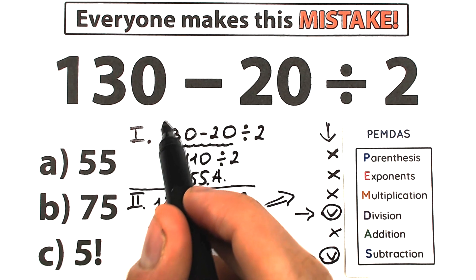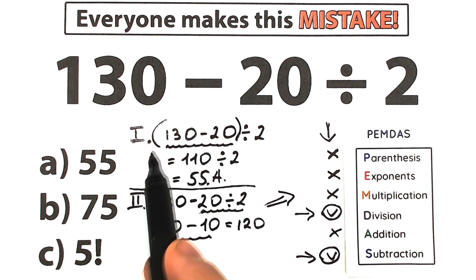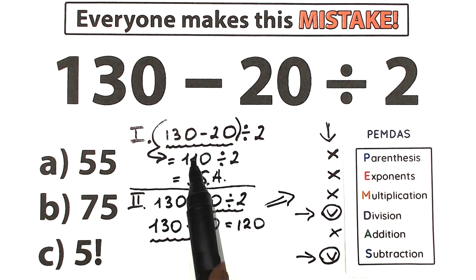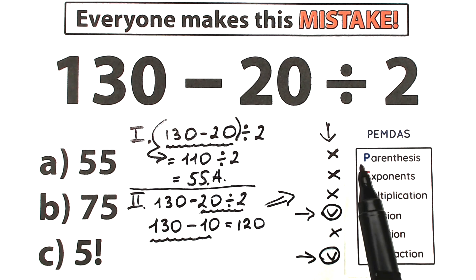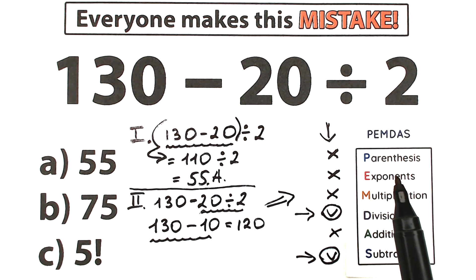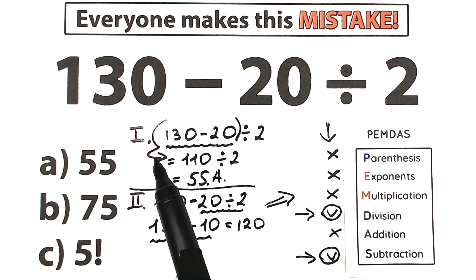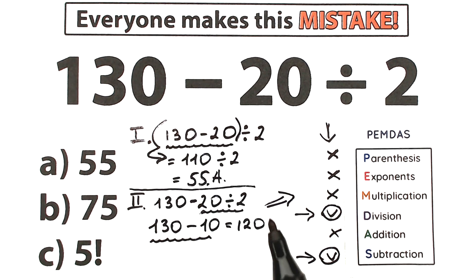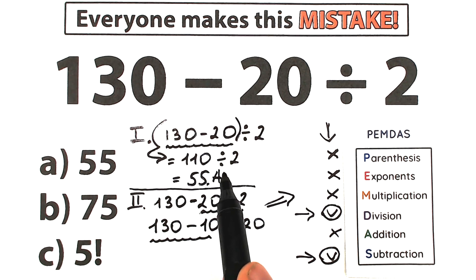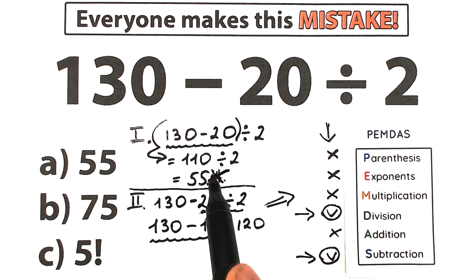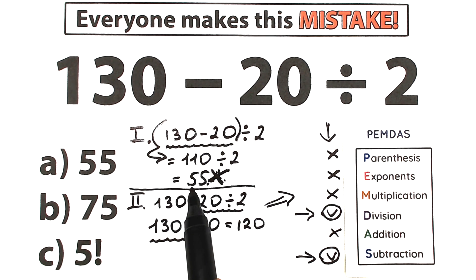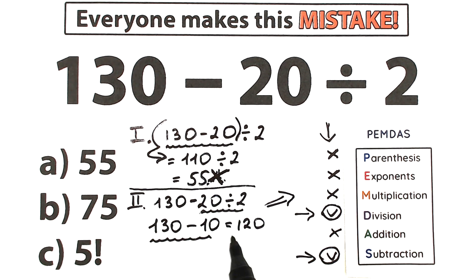But with parentheses this question will be good because you should solve this expression inside parentheses because parentheses is our first step and has the higher priority. Then subtraction will be the first step. 130 minus 20 will be our first step, 110. And in our case, correct answer is not 55, so we reject this step. With parentheses, this is 55. Without parentheses, this is not 55. In this case, correct answer is 120.